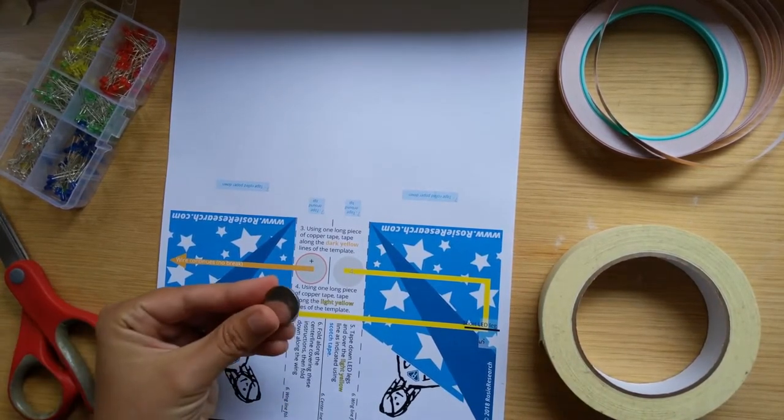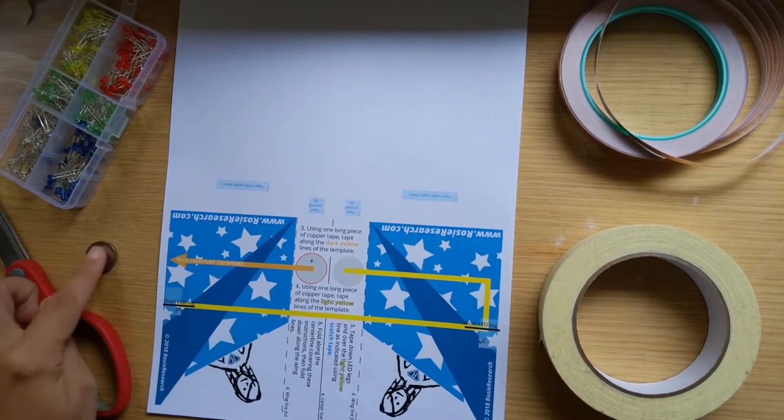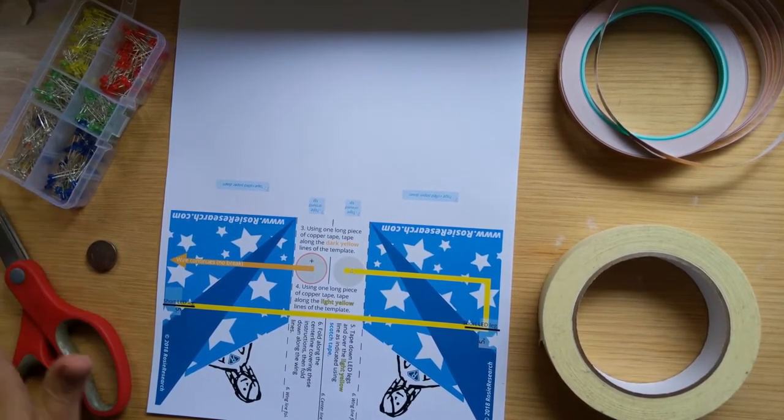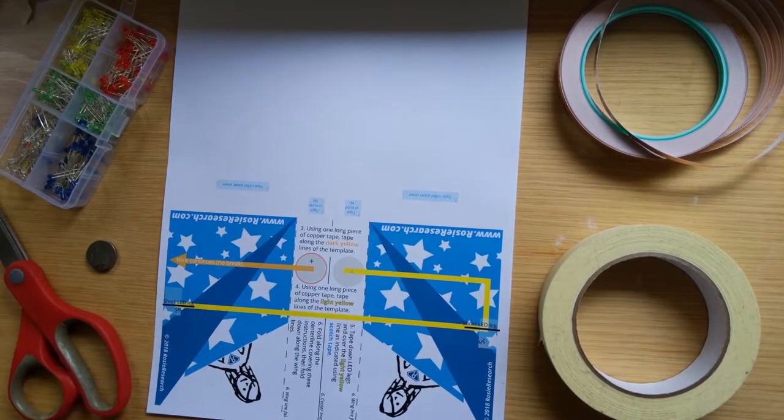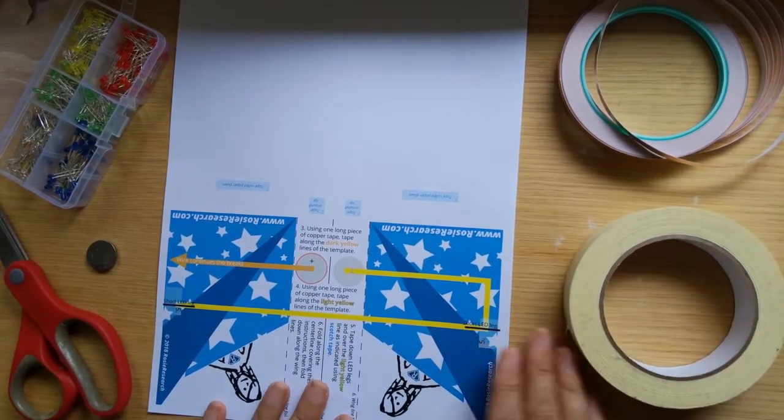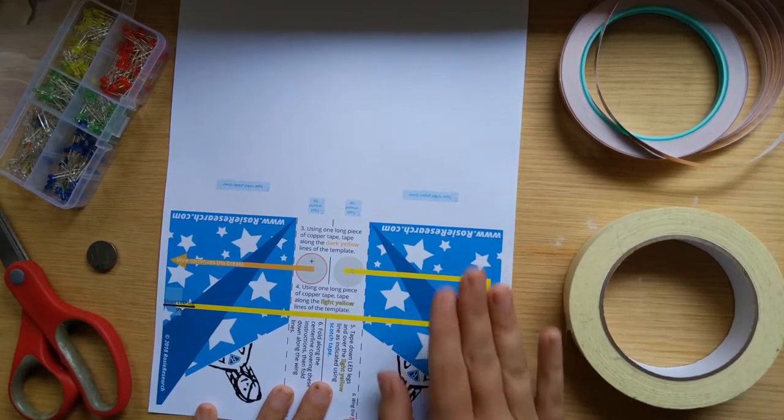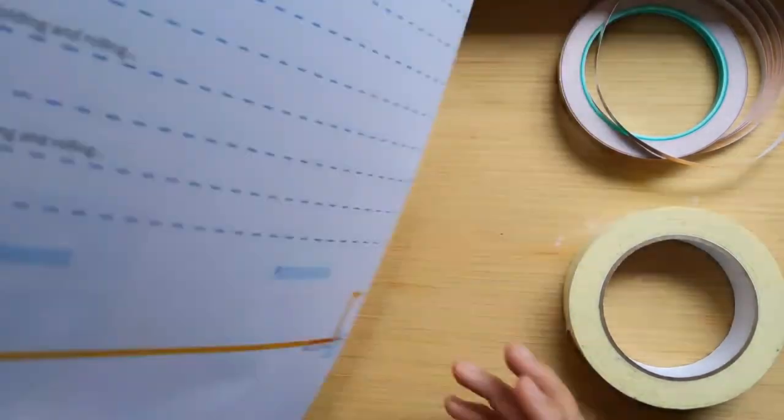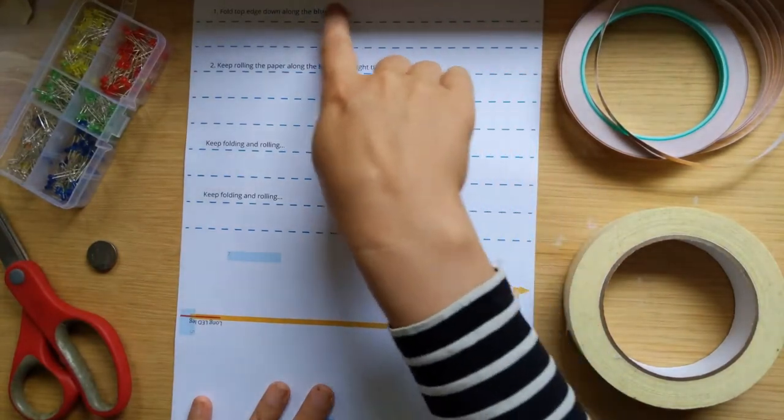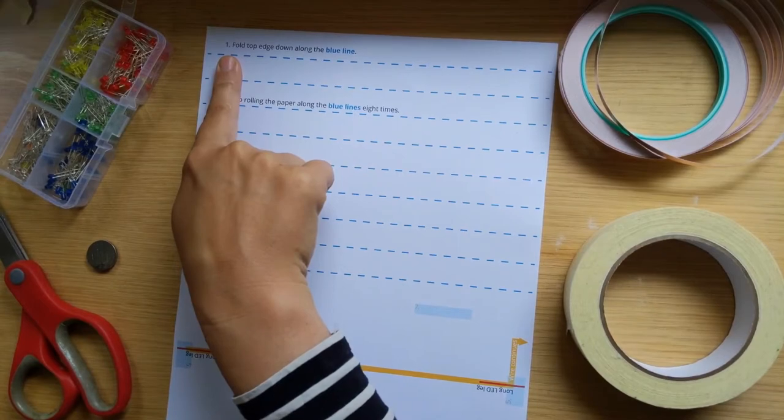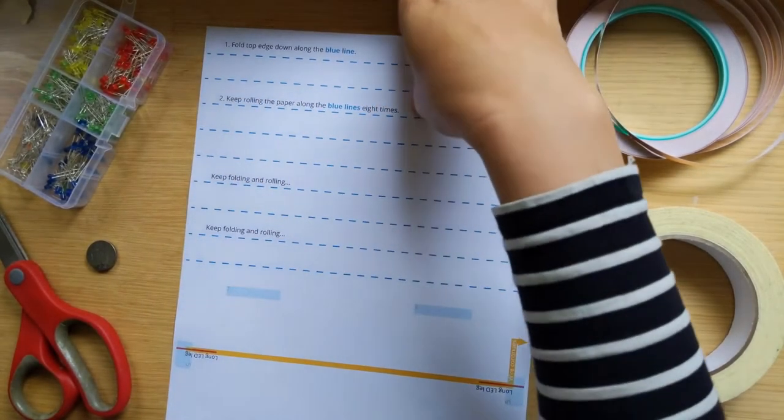You need a coin cell battery, I use CR2032 batteries, and then you need some LEDs. I have a whole bunch of them. Sometimes we need scissors, I don't think we need it for this one. So let's get started. On all of our paper circuit airplane templates, we sort of go from one to two to three as you go. So you have to find where one is.